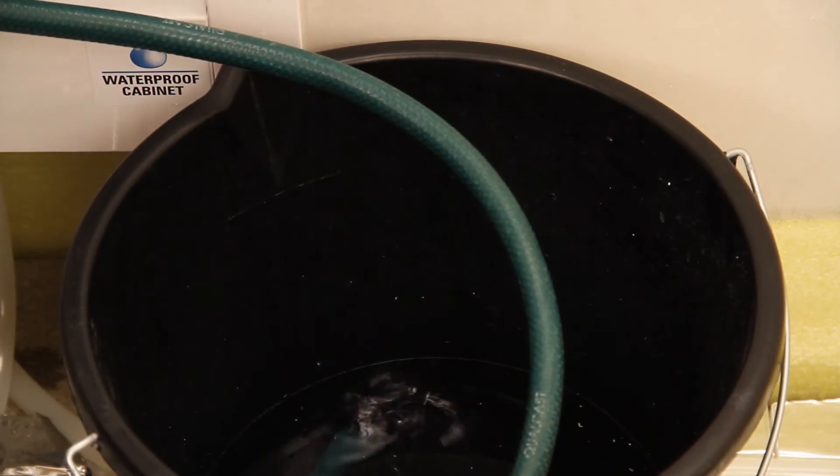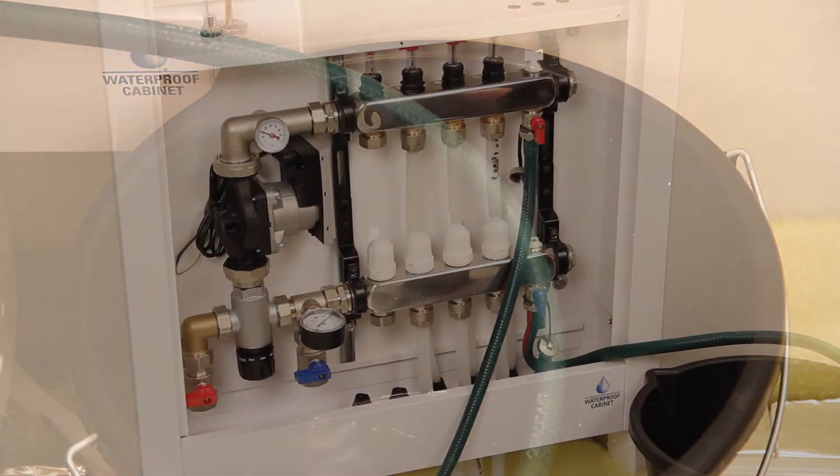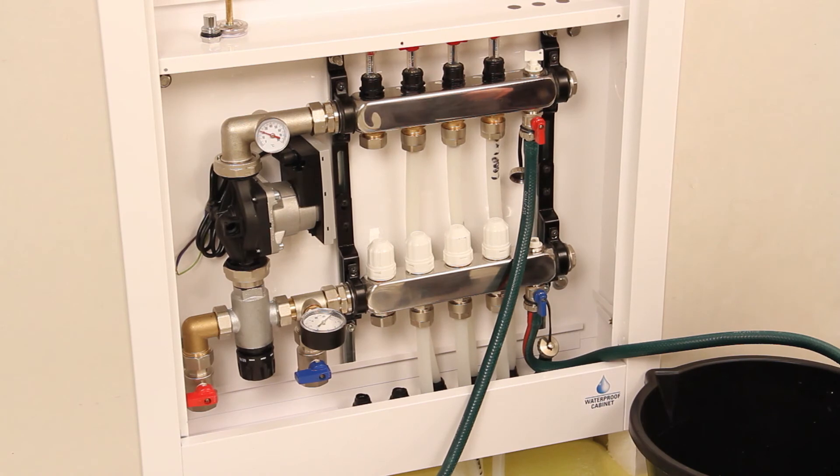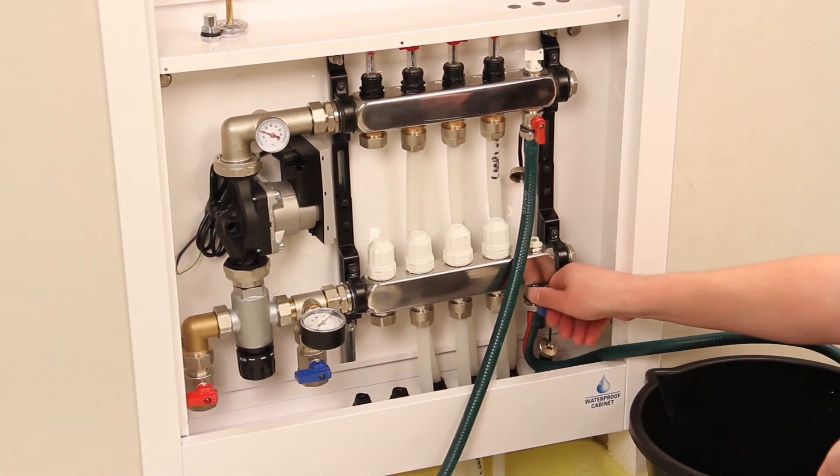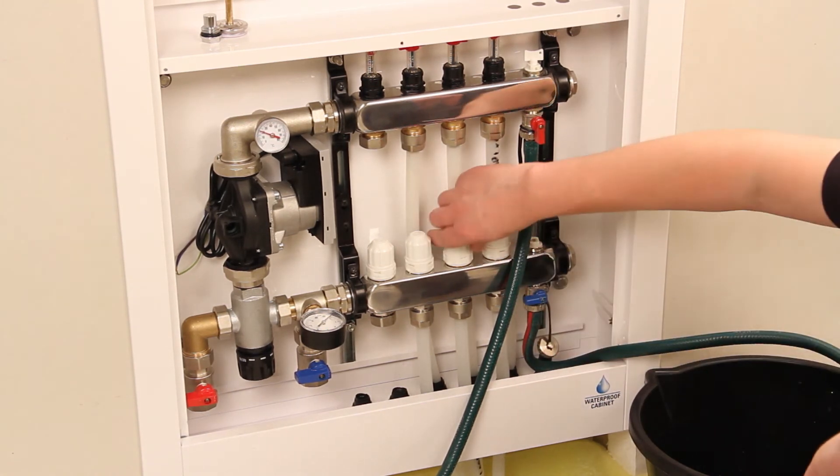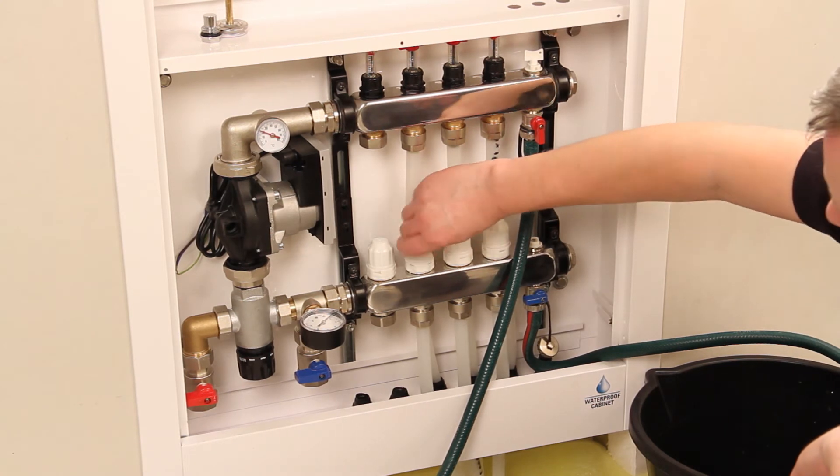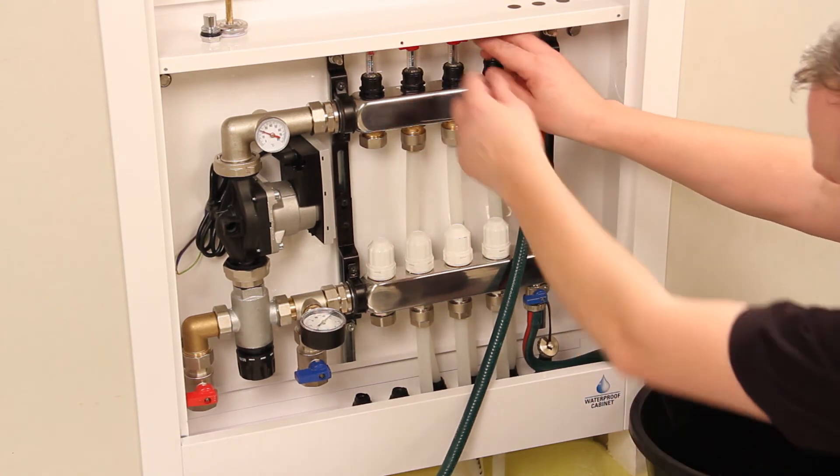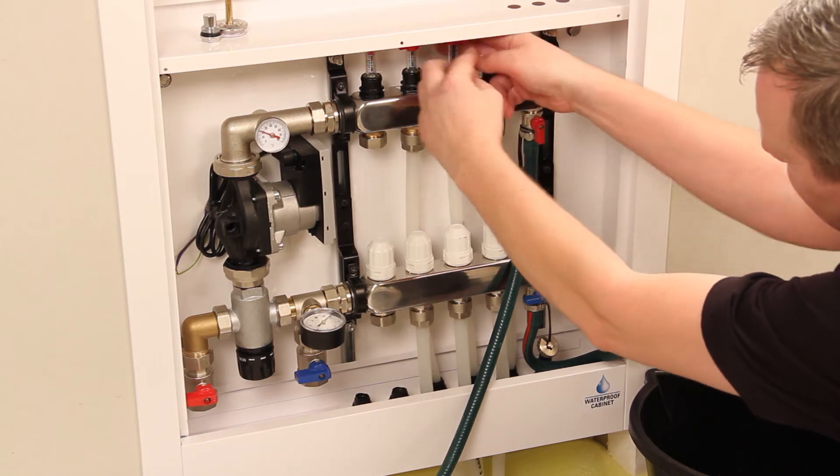Once the last circuit of pipe has been purged and filled, leave the flow gauge and return valve open. Close the drain off tap on the lower return bar. Reopen all the other flow gauges and return valves on all circuits that have pipe connected.